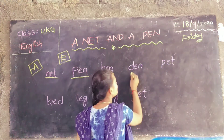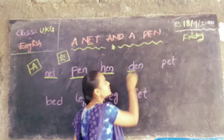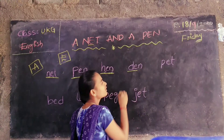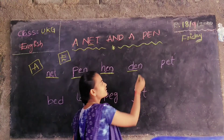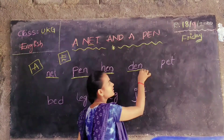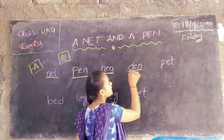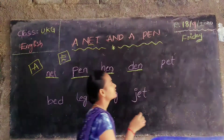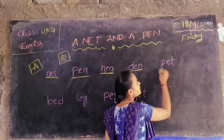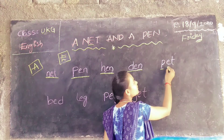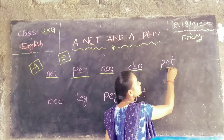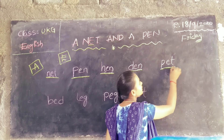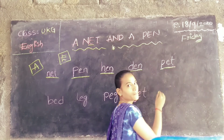Next: the sound of D is D. Next sound of E is A. Next sound of N is N. D-E-N. Den. Next: the sound of P is P. Next E sound? A. Next T sound? A. P-E-T. Pet.